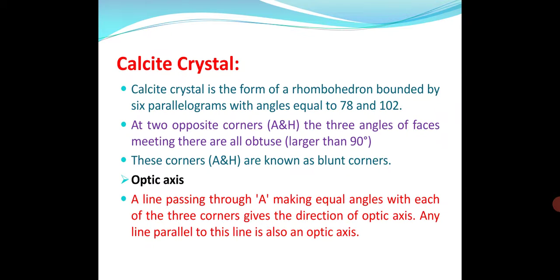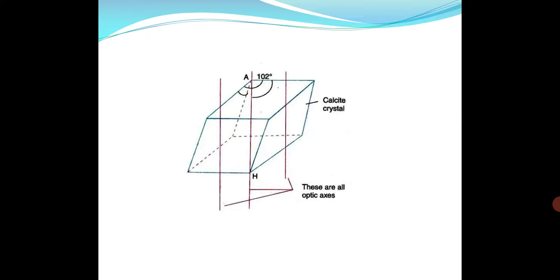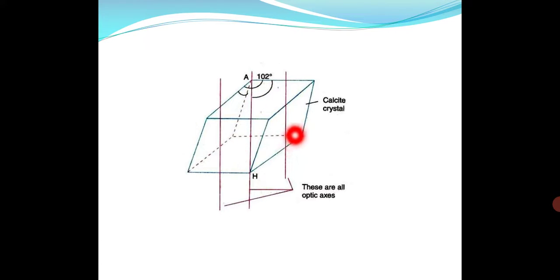In calcite crystal, there are two optical axes. The main optical axis and parallel to it there are two optical axes. This is the calcite crystal, and if we cut it in a principal section, we get this geometry.